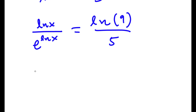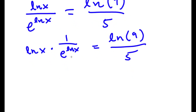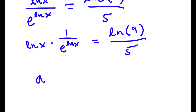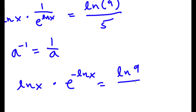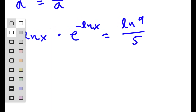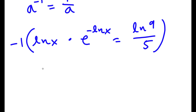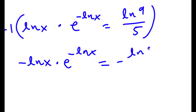Now ln x over e to the power of ln x is the same thing as ln x times 1 over e to the power of ln x. Since a to the power of negative 1 equals 1 over a, we have 1 over e to the power of ln x equals e to the power of negative ln x. So this becomes negative ln x times e to the power of negative ln x, which is equal to ln 9 over 5. Now I'm going to multiply both sides by negative 1, giving negative ln x times e to the power of negative ln x is equal to negative ln 9 over 5.